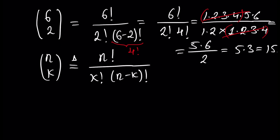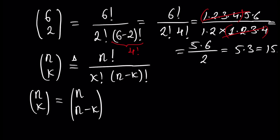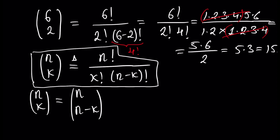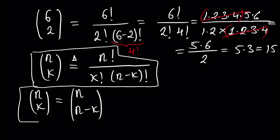So six choose two equals 15. One feature of n choose k is that n choose k equals n choose (n − k). This is quite obvious by definition, because these two objects have the same definition — only the two parts in the denominator are swapped.